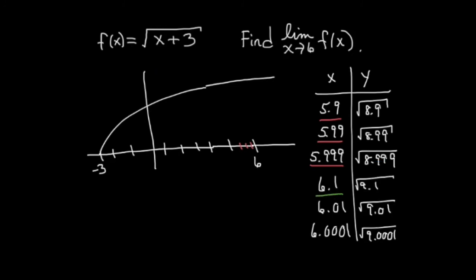Similarly, when I plug in numbers to the right of 6, getting really, really close to 6, the result gets closer and closer to the square root of 9. Either way, we find that both sides agree. The limit as x approaches 6 of square root of x plus 3 is 3 or the square root of 9.